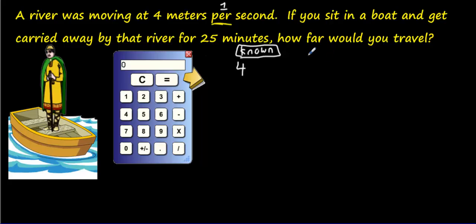What do we know here? First of all, we know that the river is moving at four meters in one second. So every second, this river is moving four meters. Four meters in one second. Now what do we not know? We need to figure something out here. What's our unknown? How far would you travel? Which one of these two is distance? The top number. So we will put a question mark with meters and below it, we're going to write 25 minutes.